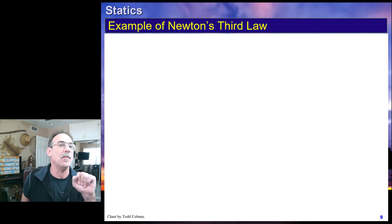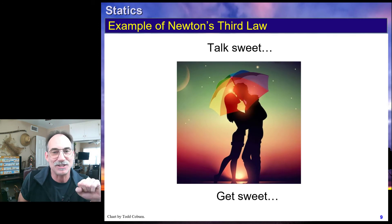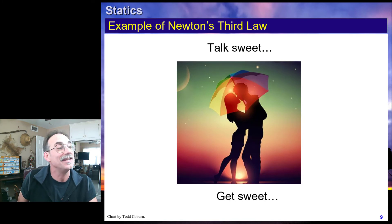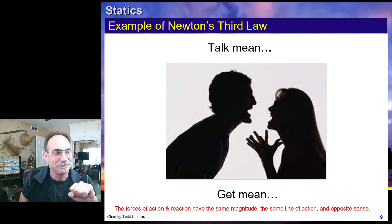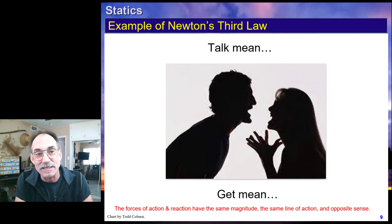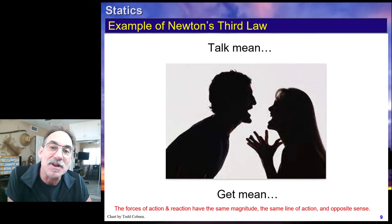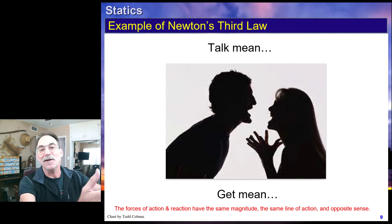Here's an example of Newton's third law: if you talk sweet, you're going to get sweet — action, reaction, same magnitude, same line of action, opposite sense. However, if you talk mean, you'll get mean. Courses of action and reaction have the same magnitude, same line of action, opposite sense. You can actually test this — talk sweet for about 10 minutes and reap the love, then turn it bad, and you'll see the reaction. Welcome to marriage.